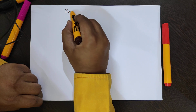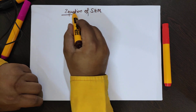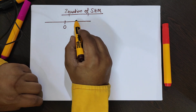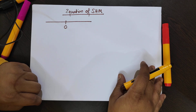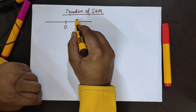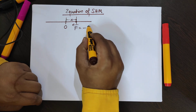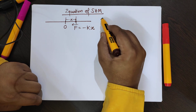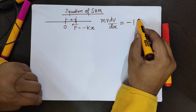Now, the equation of SHM. The mean position or equilibrium position is where x equals 0, and from F equal to minus kx, when x equal to 0 the force on the particle is 0 — that is the equilibrium position. We begin the derivation from F equal to m·v·dv/dx equal to minus k·x.